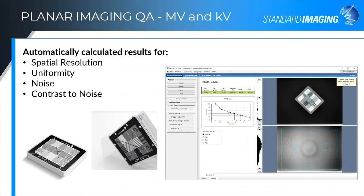For planar imaging for MV and KV, two phantoms are used: the MV-based QC3 phantom and the KV-based QCKV phantom. A phantom image and flood field are taken quickly, brought automatically into PIPS Pro, and regions of interest are automatically found and calculated. Results include the MTF curve and color-coded values for F50, F30, F40 resolution, uniformity, noise, and contrast-to-noise — green for passing, yellow for caution, red for failure.